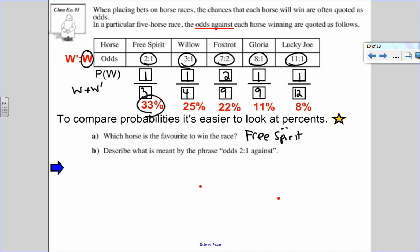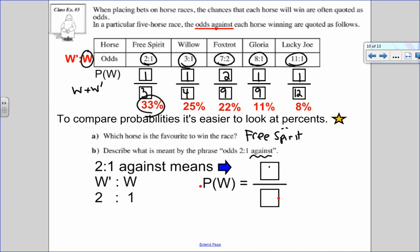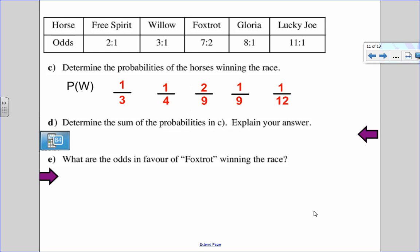Okay, next part says describe what is meant by the phrase odds two to one against. So what that means is I'm looking at how many ways can I not win to how many ways I can win. So two to one odds against means there's two ways not to win compared to one way to win, which really means that the probability of winning is that one way of winning out of the total of three ways. And again, the way that I get three ways is to add the winning and not winning to get my total.